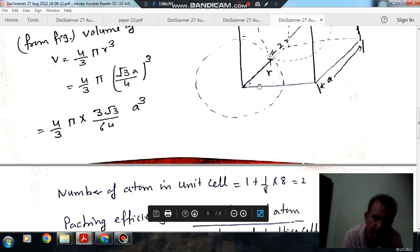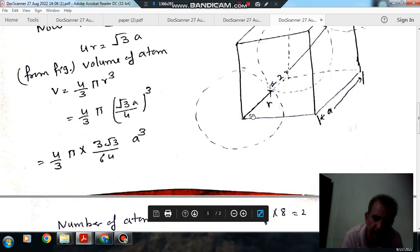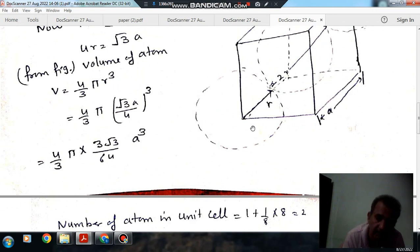And number of atoms in the unit cell is one on each corner, so it is one by eight part on each corner, and one is central atom.